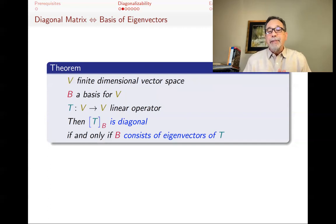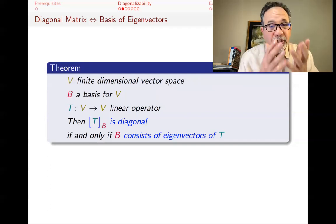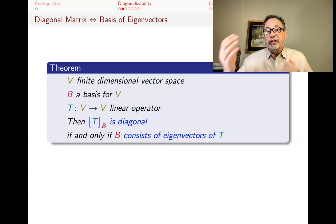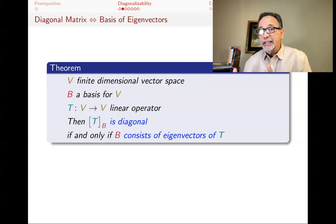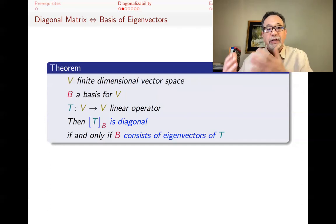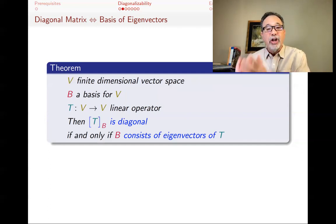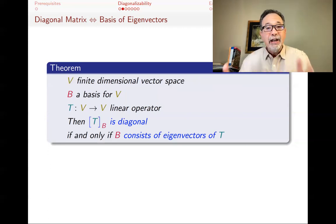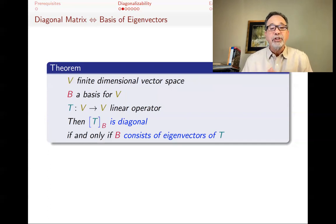As a theorem: if V is a finite dimensional vector space, B is a basis for V, and T is a linear operator, then the matrix of T with respect to B is diagonal if and only if B consists of eigenvectors of T. This basis is useful for this particular linear operator — if you can find a basis of eigenvectors, the matrix of T with respect to that basis will be diagonal.